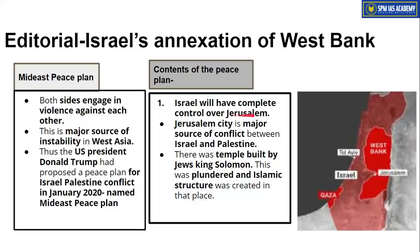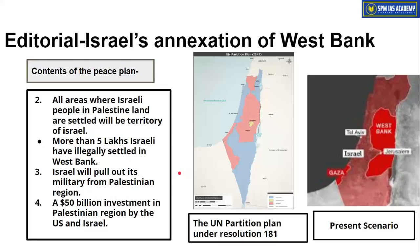Looking at the content of the Mid-East Peace Plan: the first point was that Israel will have complete control over Jerusalem. Jerusalem is a small city situated at the border between the West Bank and Israeli territory. It is religiously significant for both sides — Israeli ancient King Solomon had a temple there, and Palestinians later built an Islamic religious structure there. This makes Jerusalem a major source of conflict. The second point was that all areas where Israeli people have illegally settled in Palestinian territory will now belong to Israel. According to the UN partition plan under Resolution 181 in 1949, certain territories were designated for Palestine and Israel respectively, but Israeli people have gradually expanded their settlements, illegally capturing more and more Palestinian land.